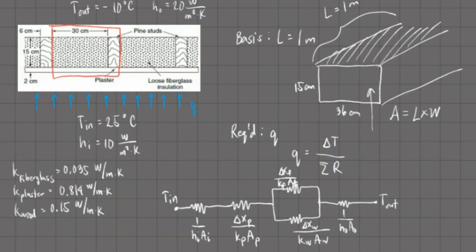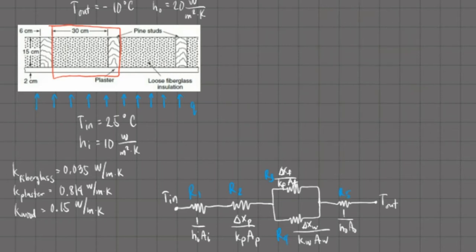For simplicity, let us call these resistances R1, R2, R3, R4, and R5. Now let's determine our total effective resistance. We can make this easier by first dealing with the resistances in parallel, that is R3 and R4. Let us combine them and call that resistance R3,4. We can solve this as 1 over (1/R3 + 1/R4). This is how you deal with resistances in parallel.